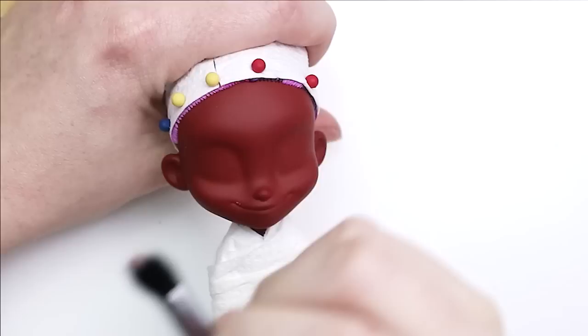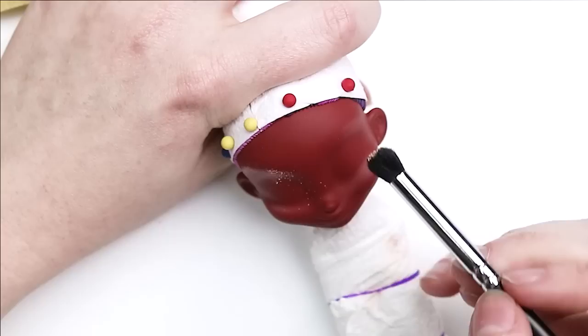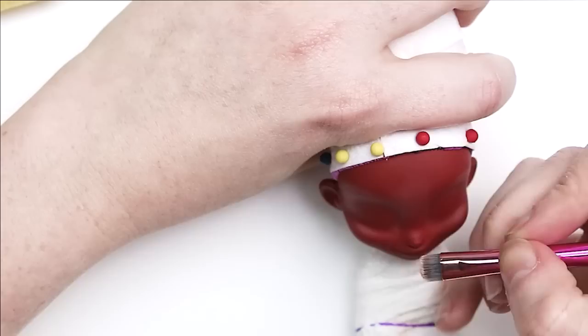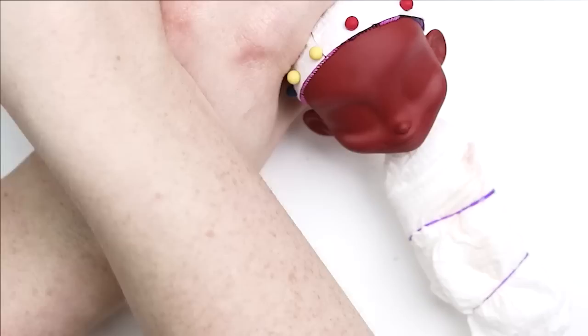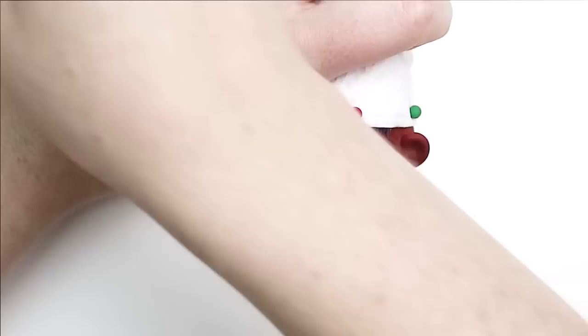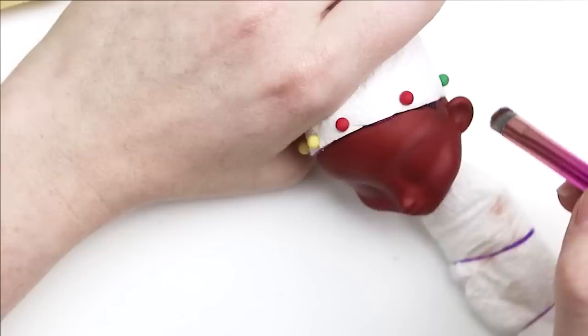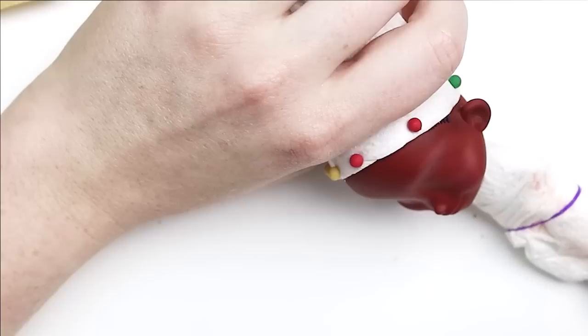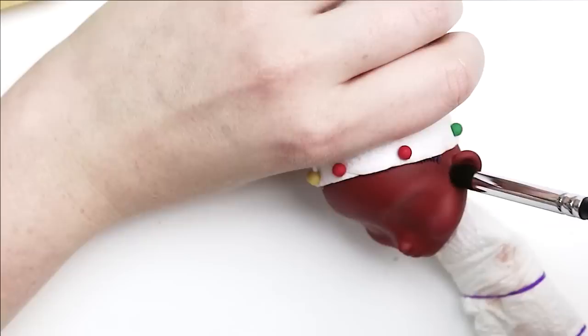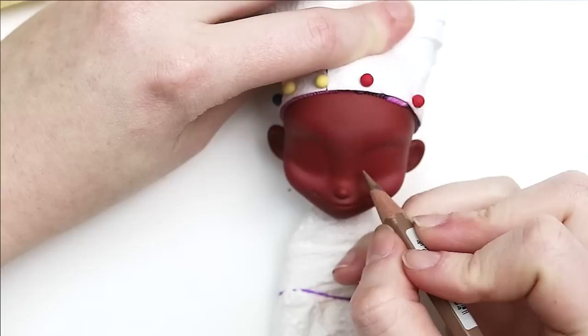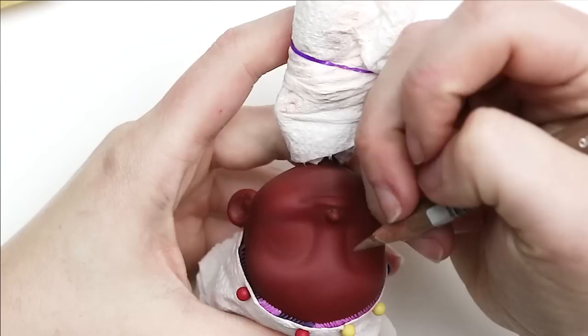To kick off this makeover, I'm going to start with highlighting and contouring. Using a very light brown watercolor pencil, I'm going to start sketching in the shape of her eyes and her eyebrows.